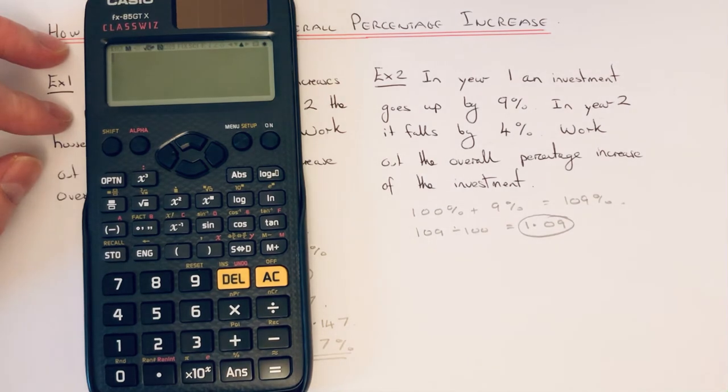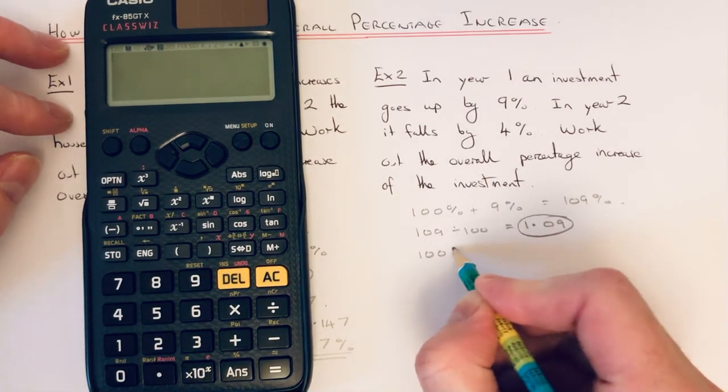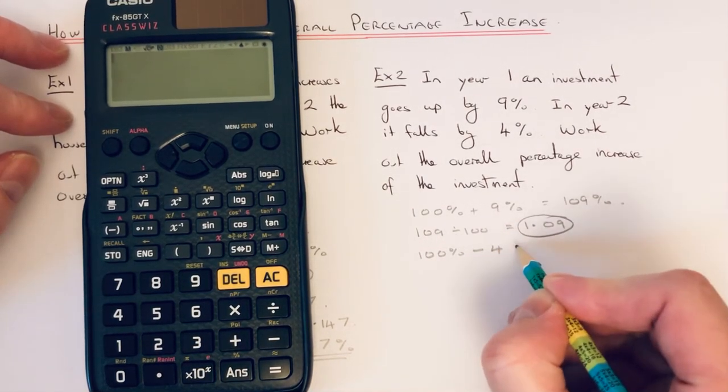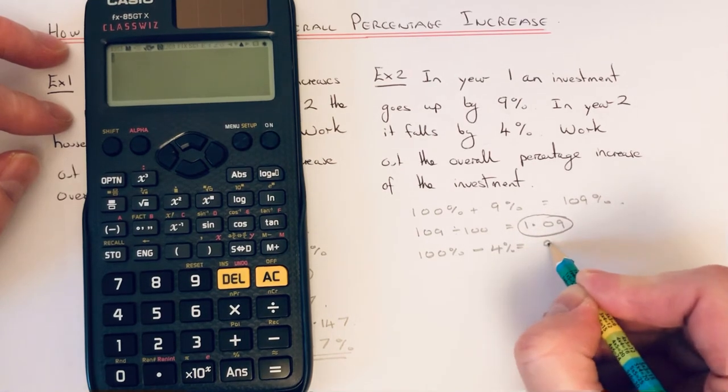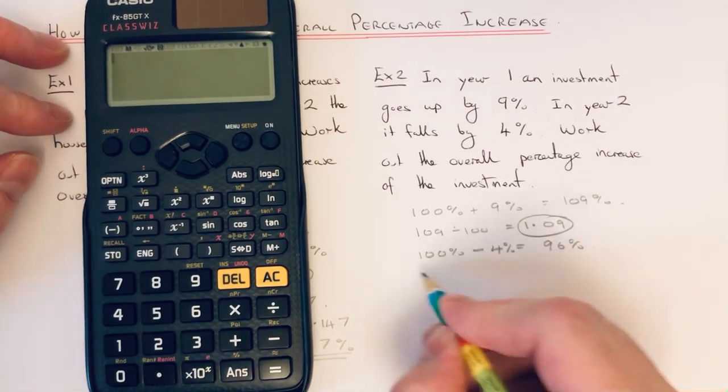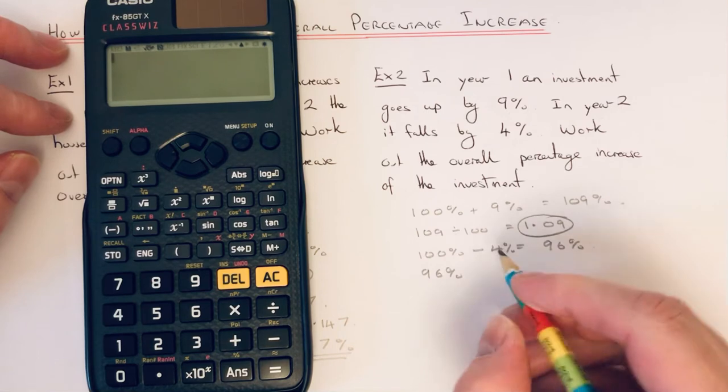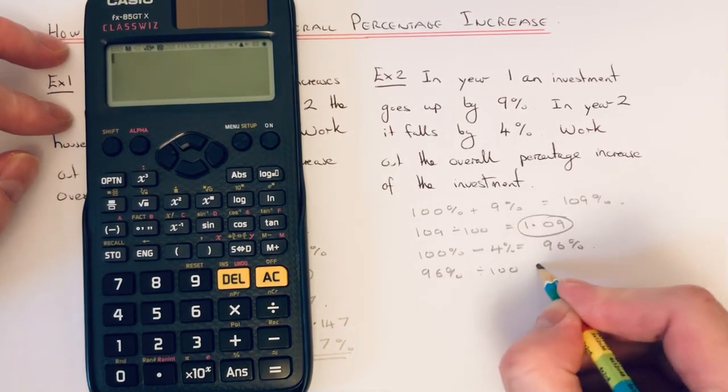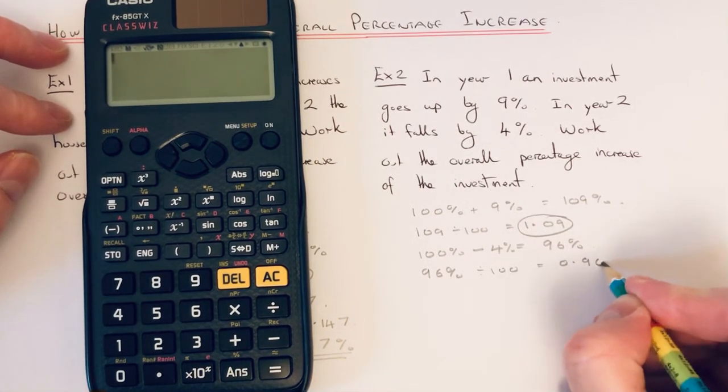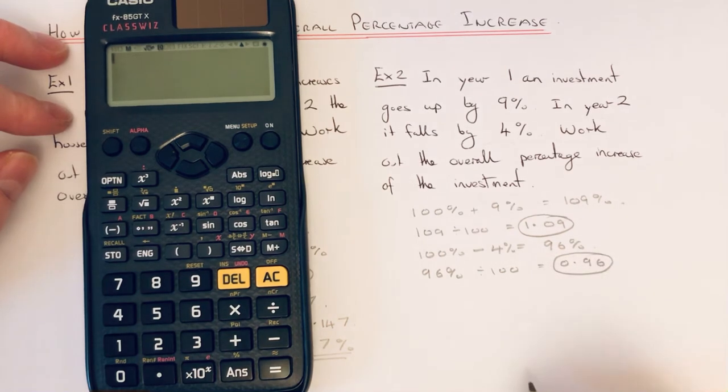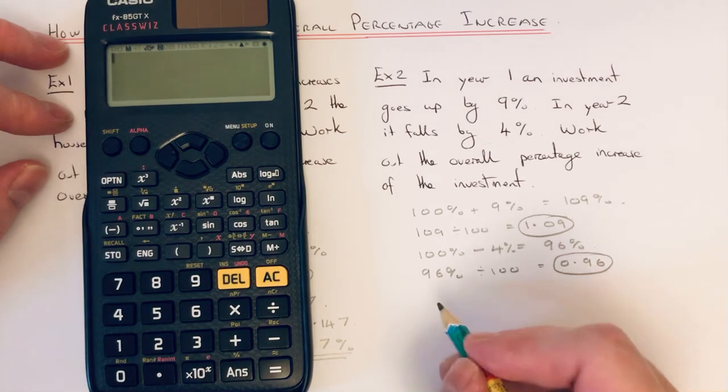Do the same thing for year 2, apart from take it off 100 because it was a decrease. So that's 96%. Convert it to a decimal by dividing by 100. So that is our second decimal multiplier. If we multiply these two decimals together next.